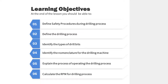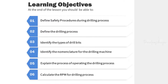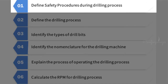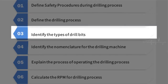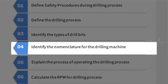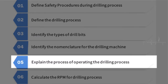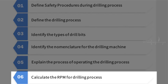Next are the learning objectives. At the end of the lesson, you should be able to: one, define the safety procedures during the drilling process; two, define the drilling process; three, identify the types of drill bits; four, identify the nomenclature for the drilling machine; five, explain the process of operating the drilling machine.